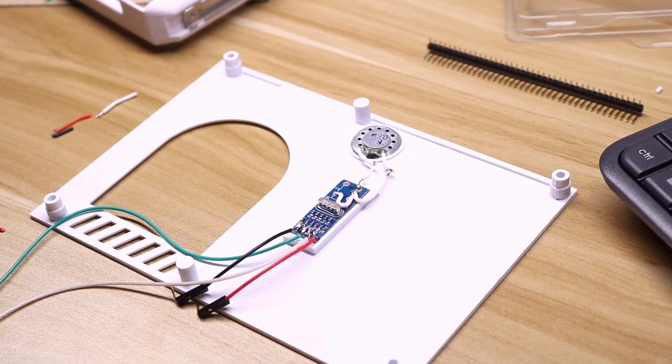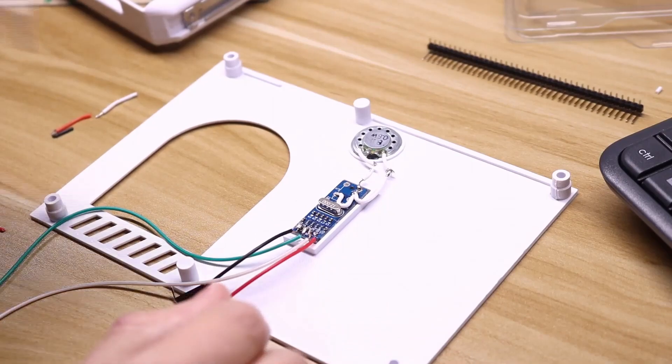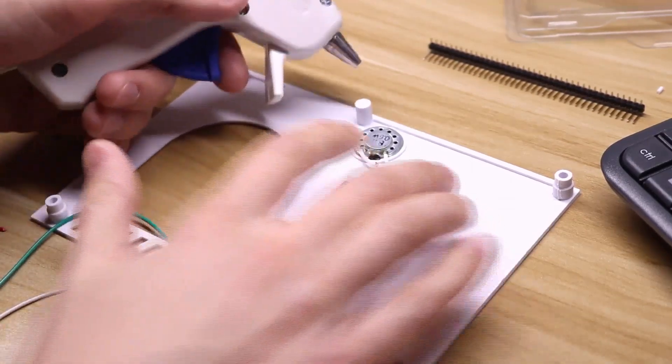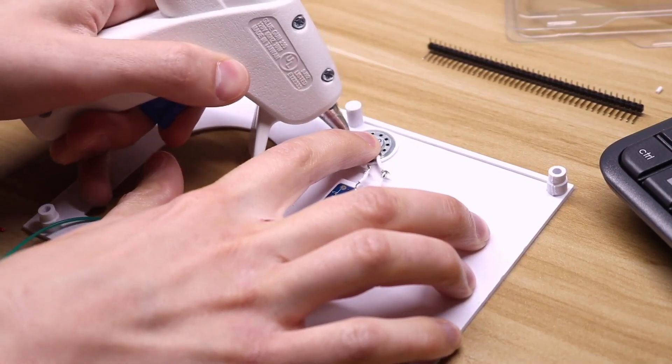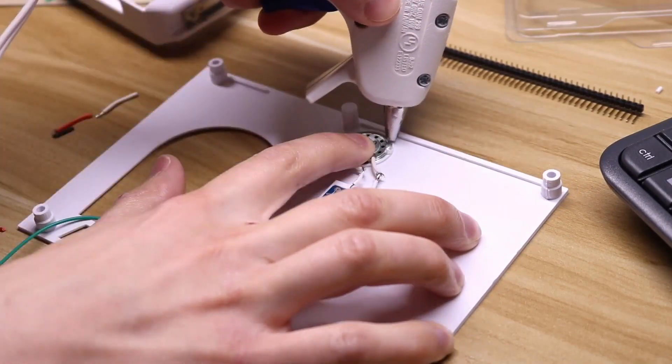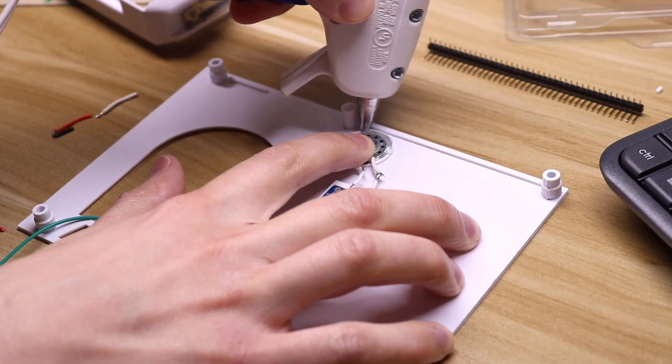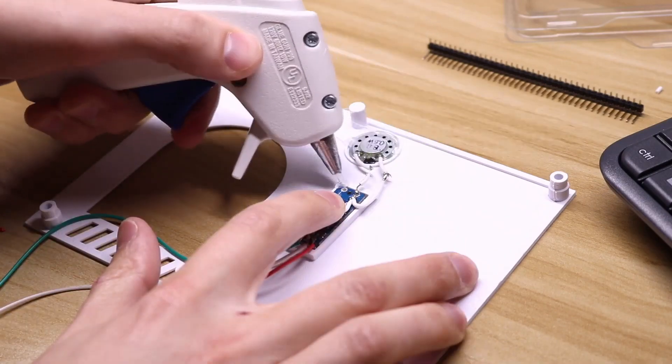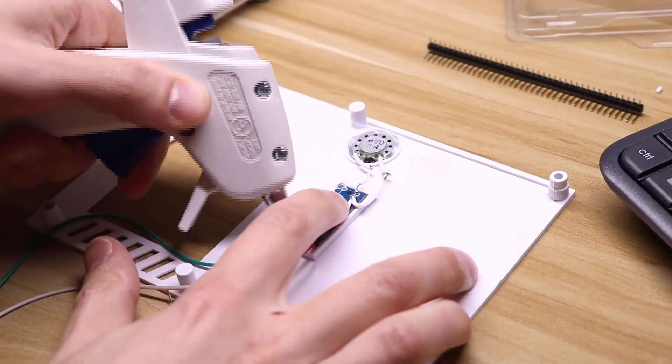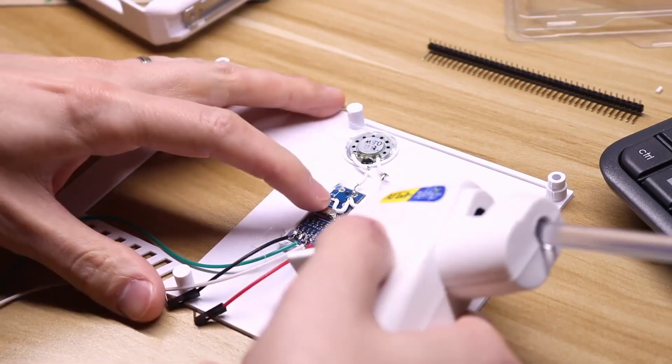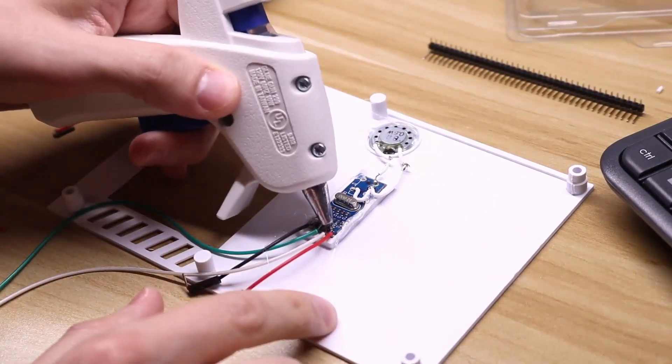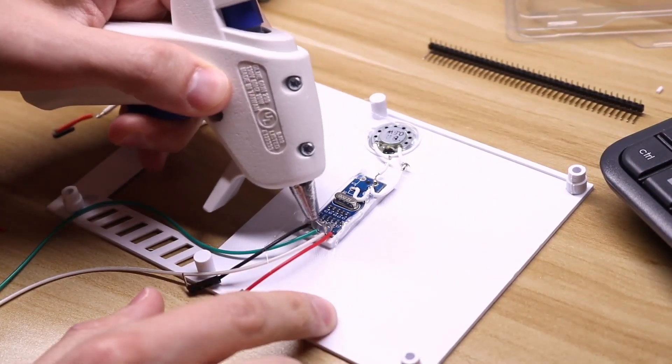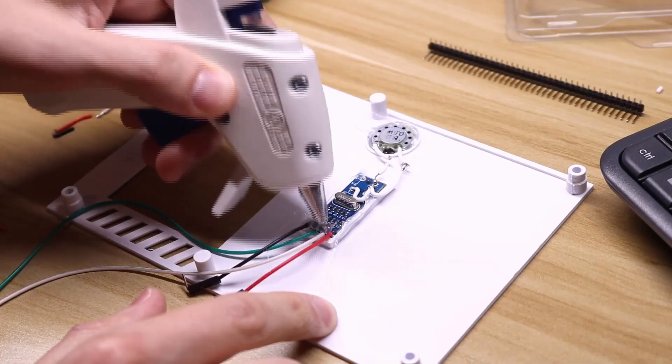Now that we have everything wired up, we're going to secure this to the lid. Get your speaker, your sound card, and a hot glue gun, and we're going to carefully secure this to the lid. I'm also going to use the hot glue to give some support to these wires here because they are a little fragile.